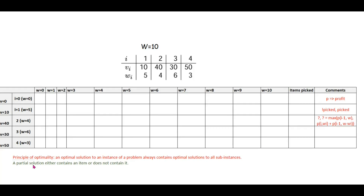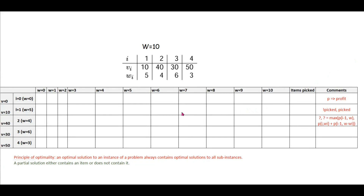Let's solve the 0-1 knapsack problem with dynamic programming. Here we have a problem of four items with corresponding weight and dollar value — you can say profit as well. The maximum load is 10. To solve this problem, first we need to make a 2D matrix where we list down each of these items from 1 to 4. We also have i equal to 0, which means no item has been selected. This comes in handy when we solve this kind of problem.